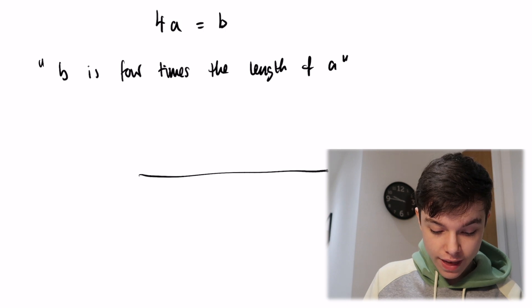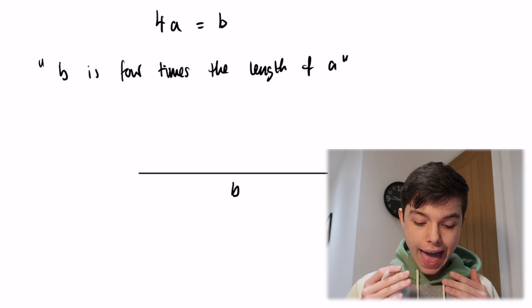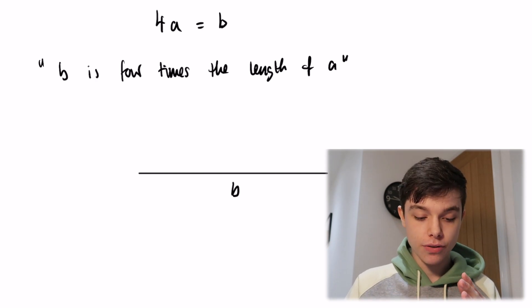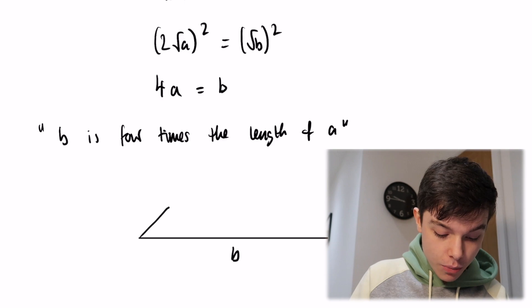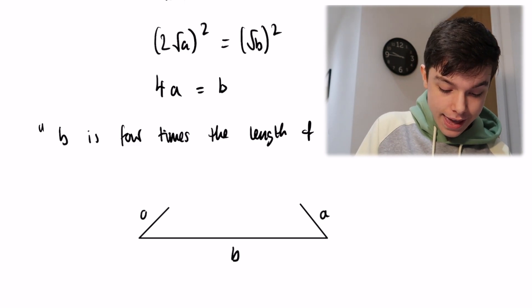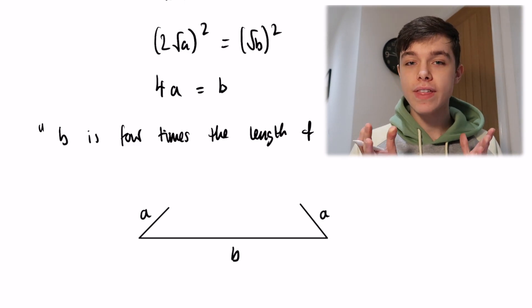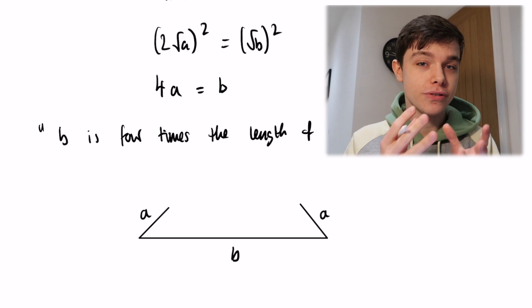Let's try to draw a triangle from that information. We draw side B along the base, and since B is 4 times the length of A, we need to attach the two sides of length A. Putting it all together, we can see that we cannot form a triangle from that — the two sides of length A don't reach. So the first equation also doesn't work. Homer's maths isn't going great.